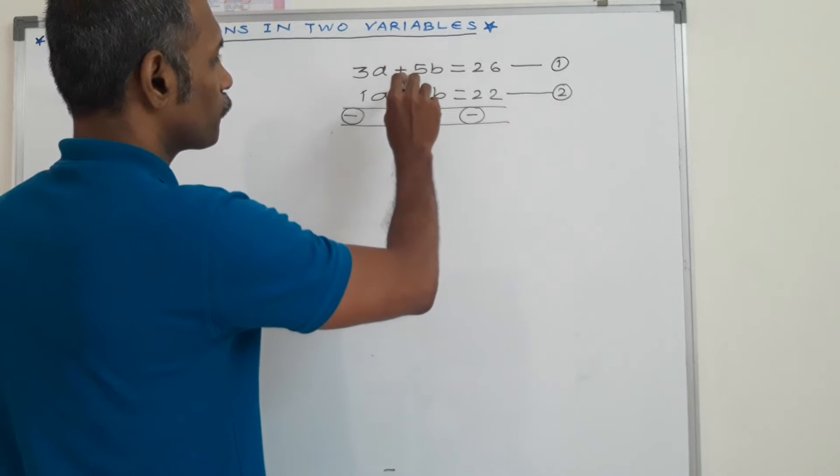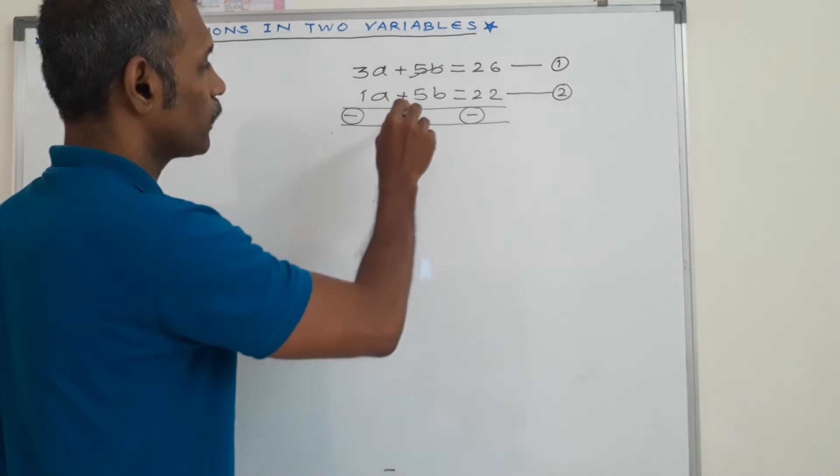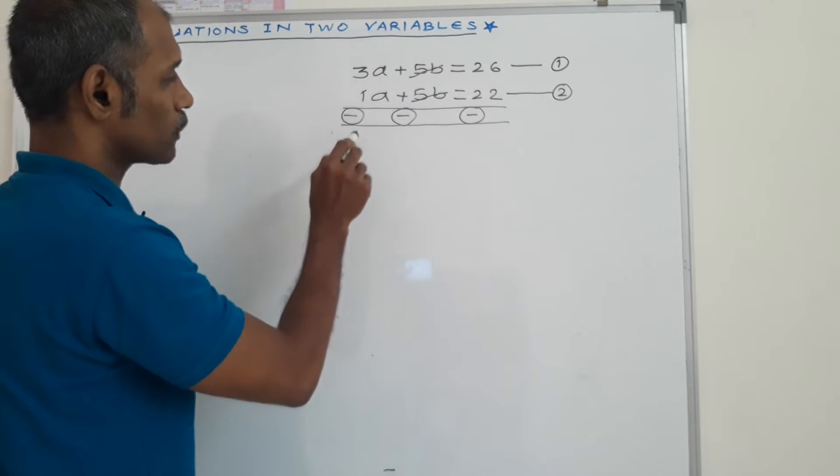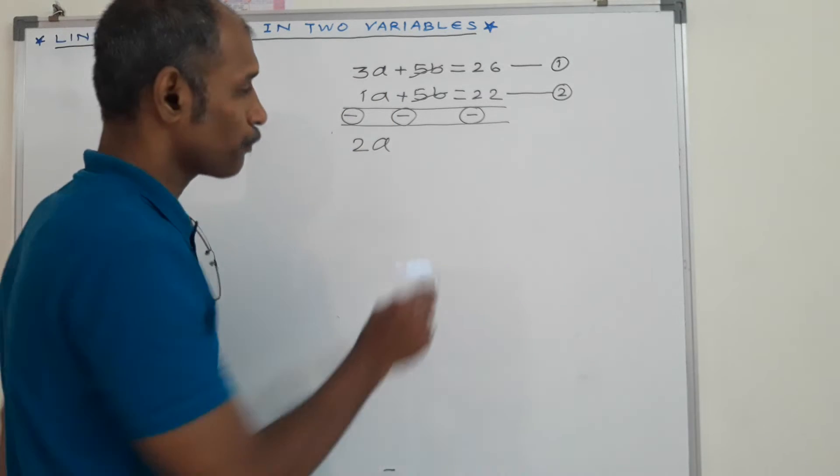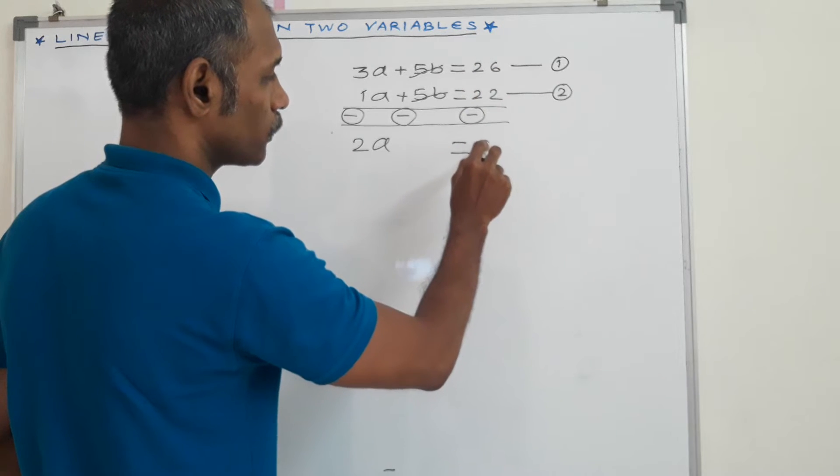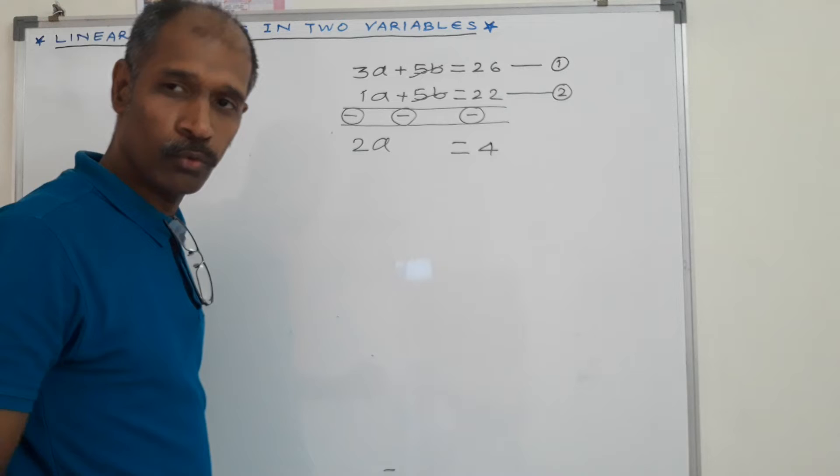Now here 5B and minus 5B cancel. 3A minus 1A, 2A is equal to 26 minus 22 is equal to 4.